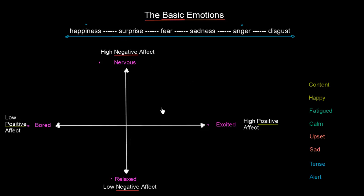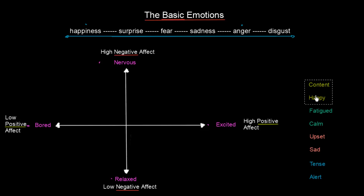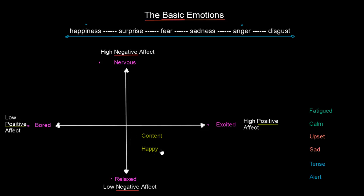Now it becomes more tricky. We have spaces in between the dimensions, and we'll place the remaining emotions there. We have four colors and four quadrant spaces, with two moods going into each quadrant. First, content and happy — definitely when something has a high positive effect and a low negative effect. Happy goes toward the higher positive area, and content is placed a little further down where there is also a low negative effect.